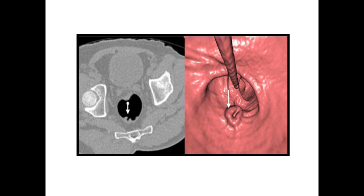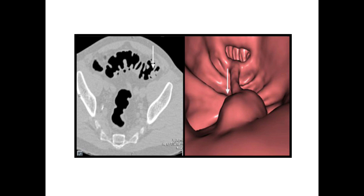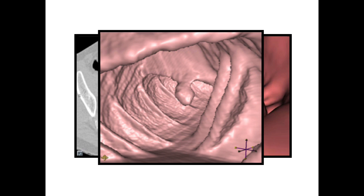Here's an example: a lesion posteriorly in the rectum — this is the fly-through snapshot view. You can see the rolled edge and puckered surroundings; even on that view it looks a lot like a cancer. Here's another view on the 2D — this is a diverticular stricture or segment of the sigmoid colon. It's difficult to see, but you can still make out the stalk and a polyp. On the fly-through view you can see quite nicely, and in the same patient, a polyp on the fold is visible on the snapshot view.